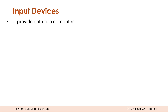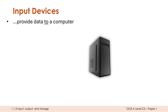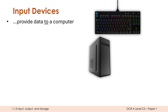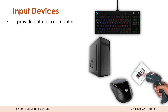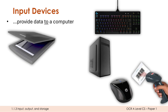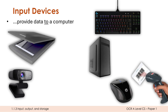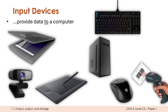Input devices provide data to a computer — their primary aim is to give a computer some data. They plug in or are wireless. For example, a keyboard provides what keys are being typed and for how long they're held down. A mouse controls the cursor. A barcode reader scans barcodes. A scanner provides an electronic version of a paper document. A webcam takes in images and audio. A graphics tablet provides what the user is drawing.